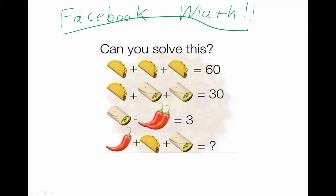And so we have taco, taco, taco, which we really could just write as t plus t plus t equals 60. Therefore, that has to be 3t equals 60.